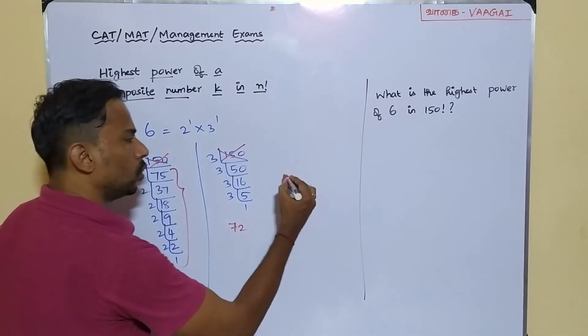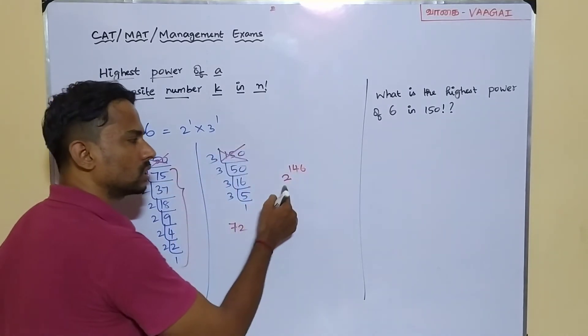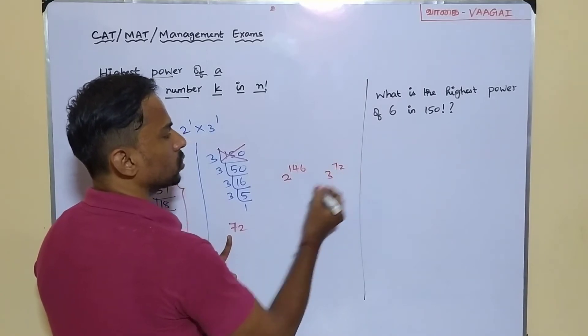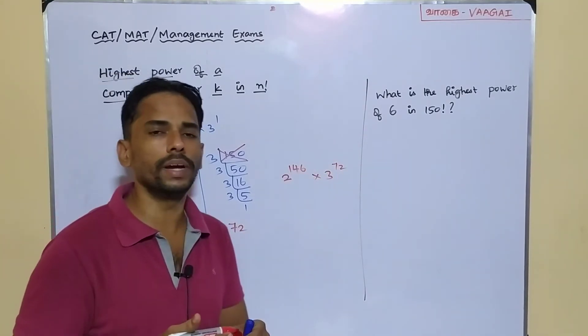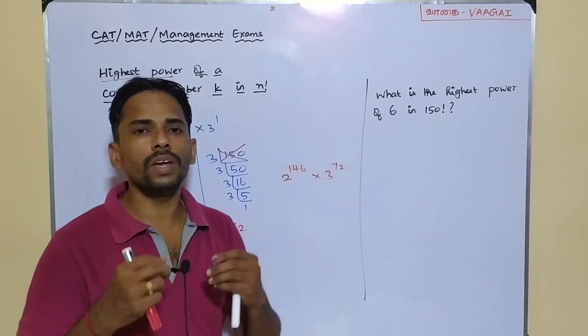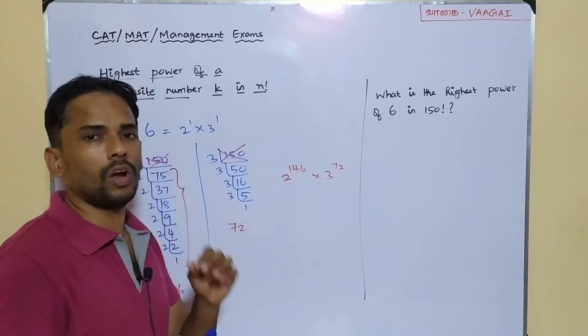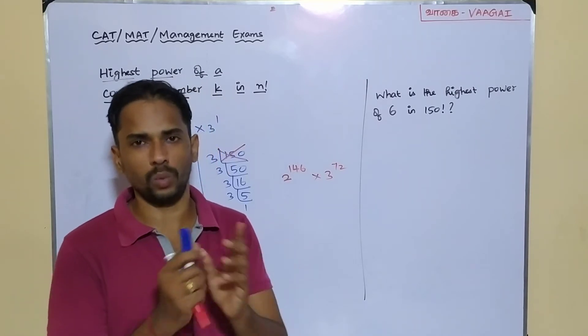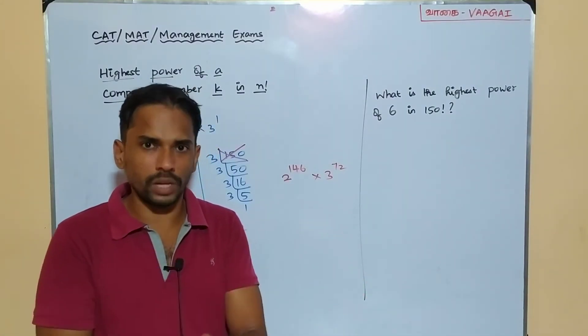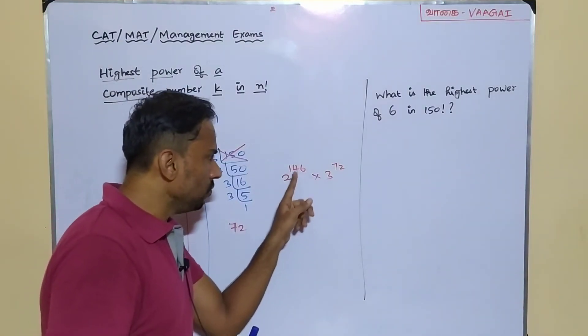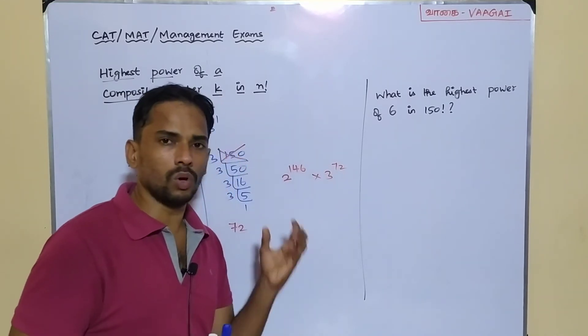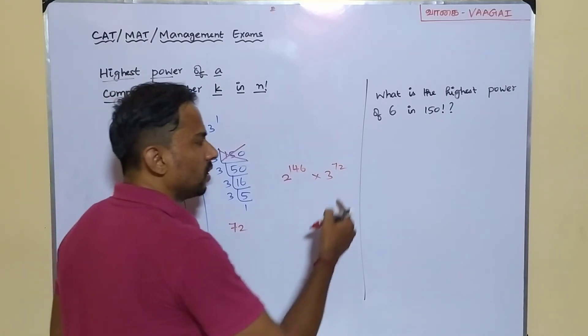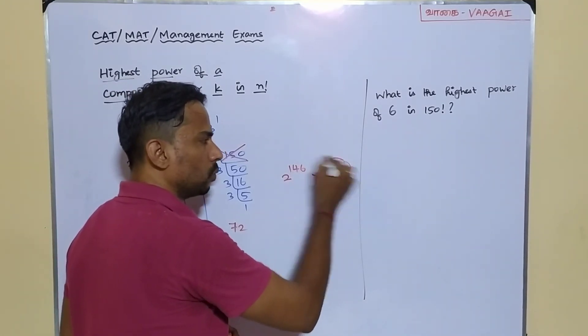So that means I will have 2 power 146 inside this 150 factorial. Maximum 2s in this 150 factorial will be 2 power 146, and same way maximum power of 3 will be this 3 power 72. So I can have 2 power 146 and 3 power 72 inside my 150 factorial. But now what we need, we need the highest power of 6 only. In order to form 1 six, we definitely need to combine 1 two and 1 three together. So we have got 146 twos and here 72 threes. With this collection, how many maximum number of 6 can we create or can we form?